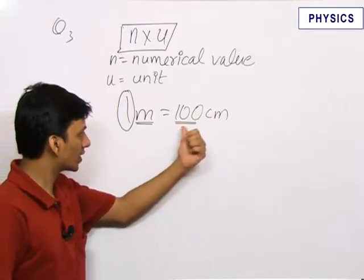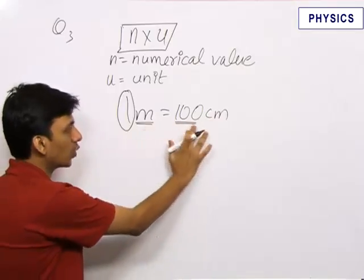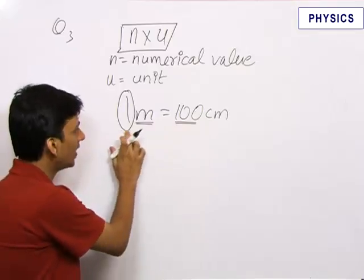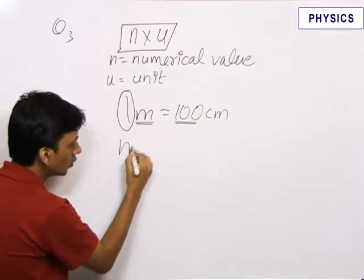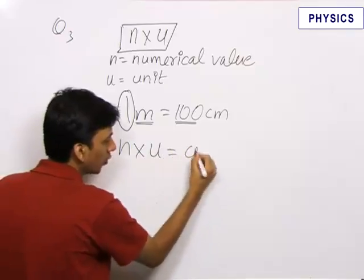Now, what I want to explain here is that both these quantities are the same. The n into u is same. So, what I want to say is that n into u is always constant.